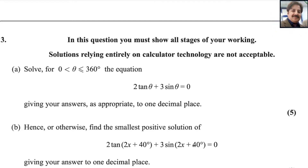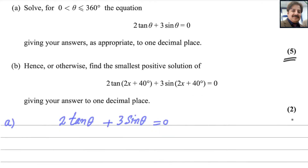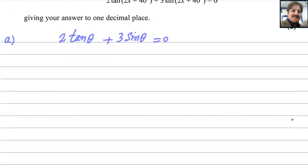This is question number 3 from Pure Math 2, Pure Edexcel A-Level exam, taken in October 2023. In this question you must show all stages of your working — solutions relying entirely on calculator technology are not acceptable. First part: solve for 0 < θ ≤ 360 degrees the equation 2 tan θ + 3 sin θ = 0, giving your answer appropriate to one decimal place. This question is worth five marks. Let us start.